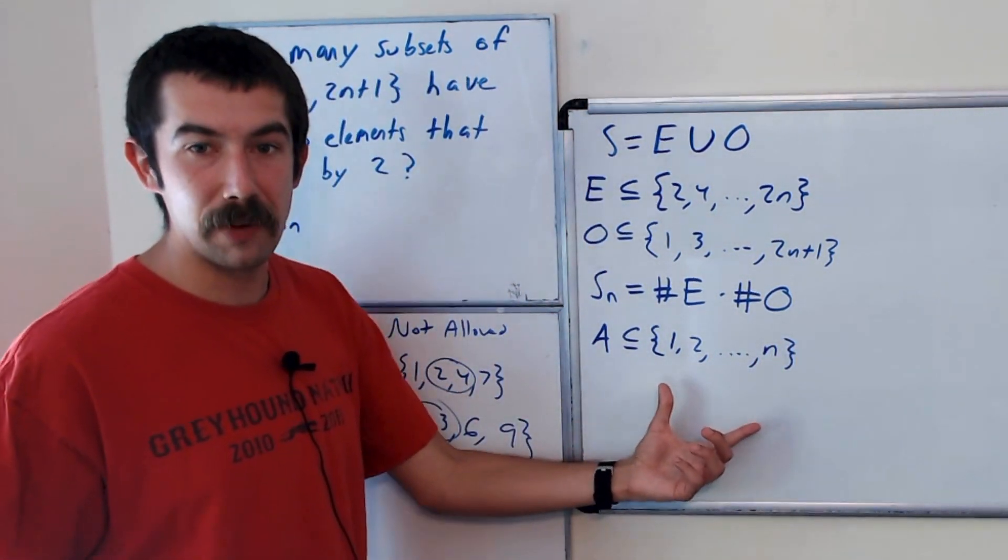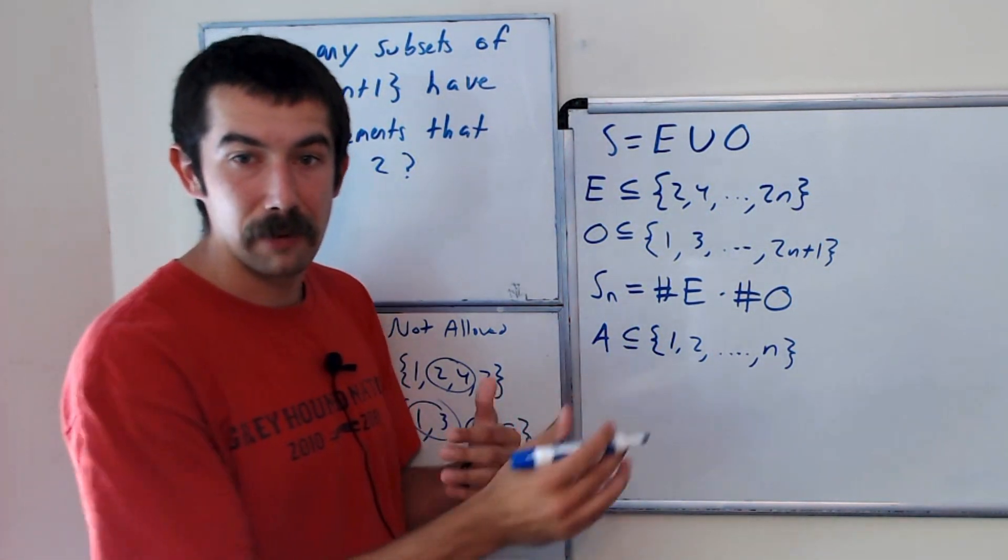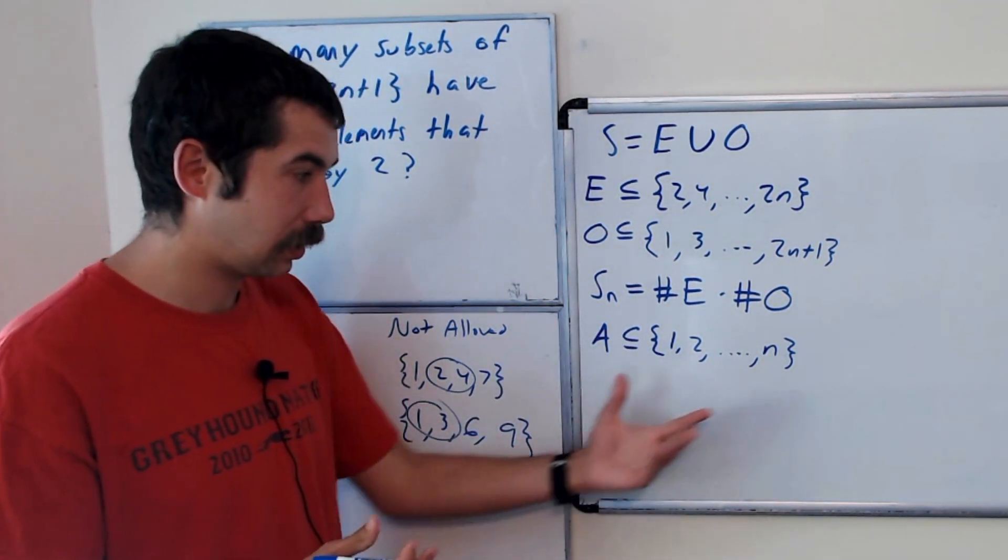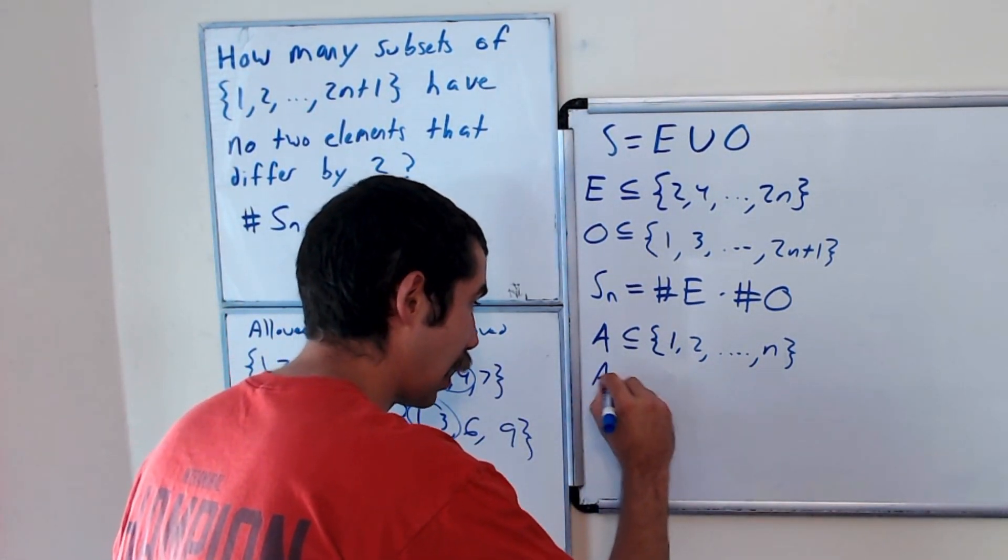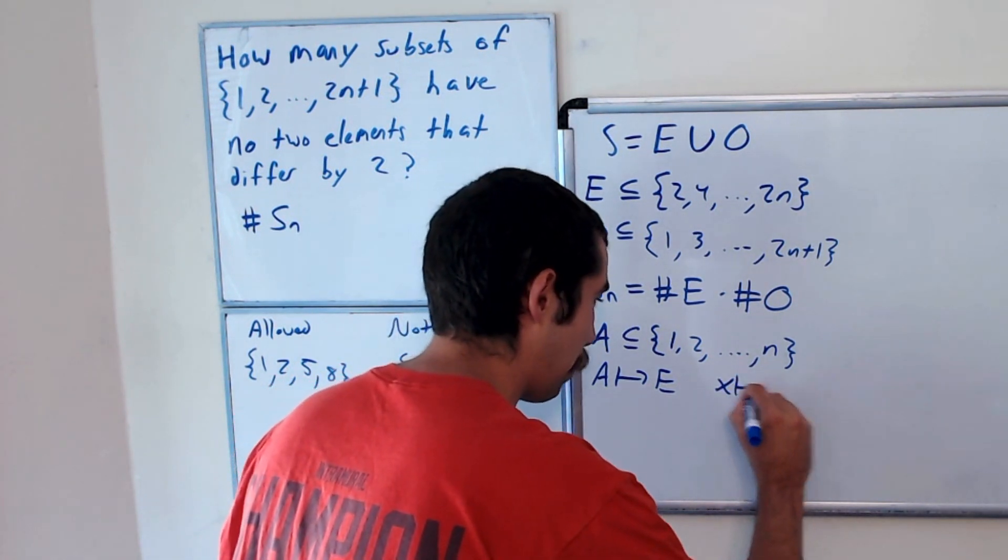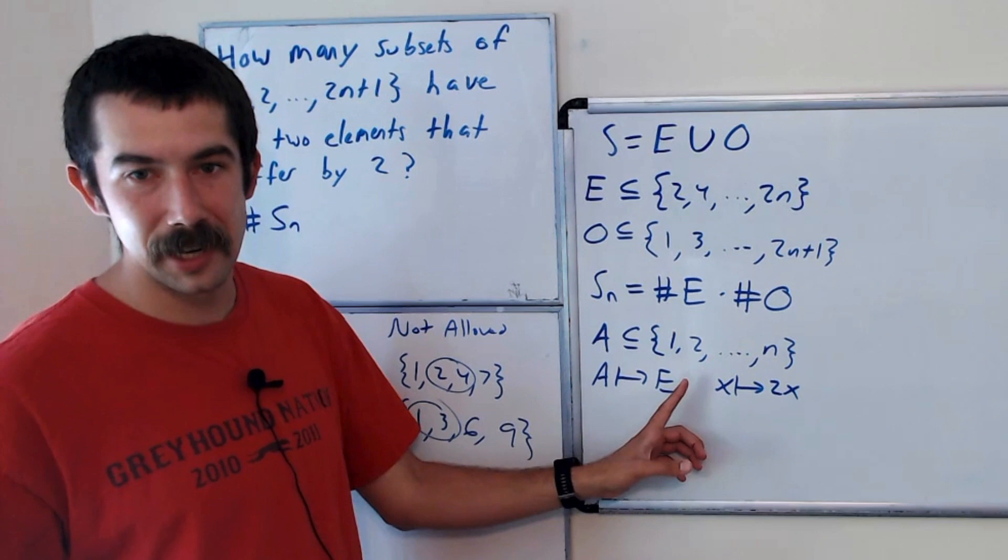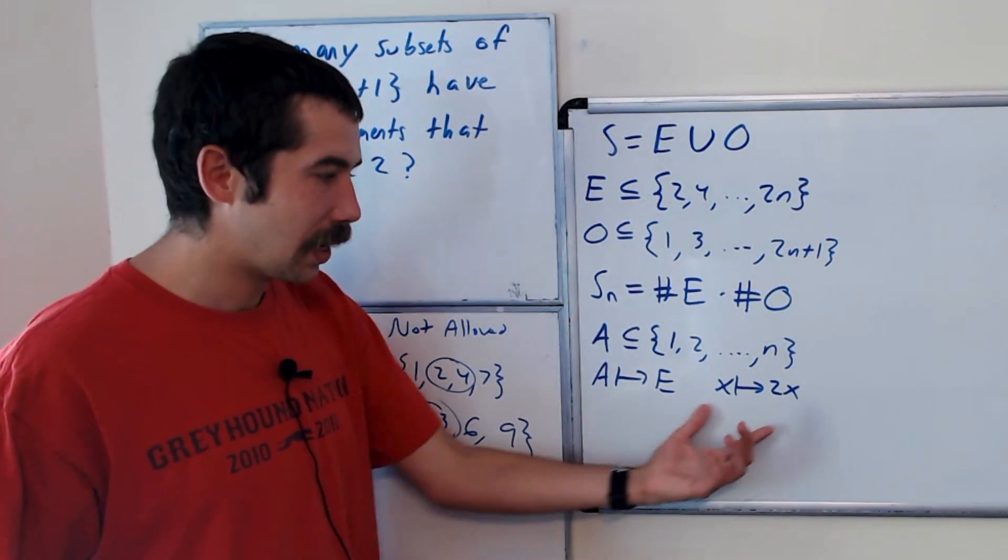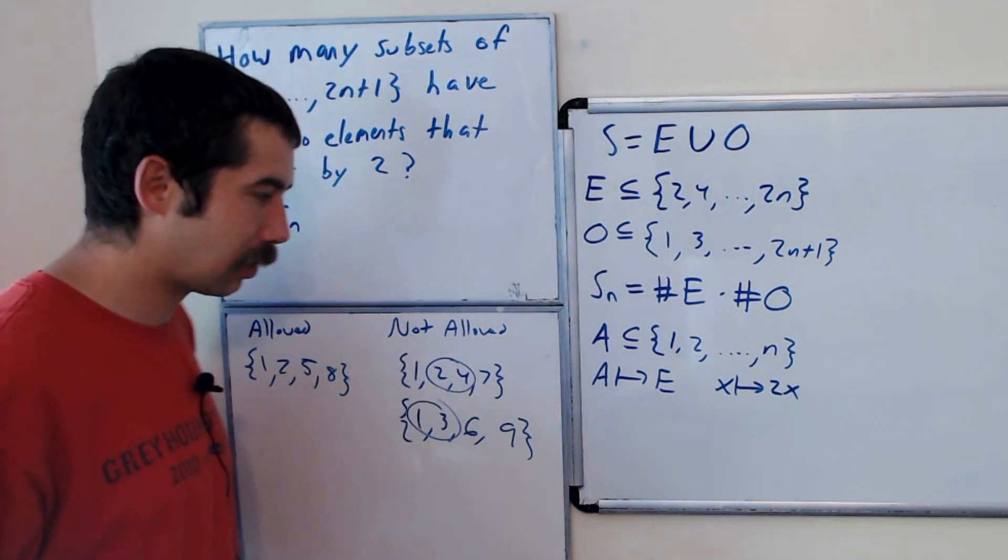And we want to count the number of A that don't have consecutive entries. And what we're going to do is we're going to take this subset and we can map it back to E by taking X and mapping it to 2X. So we would take our subset and just double every entry, and then that's going to give us E.